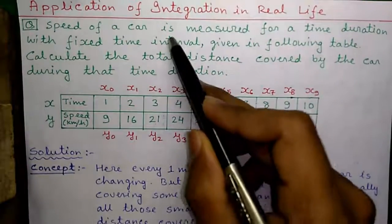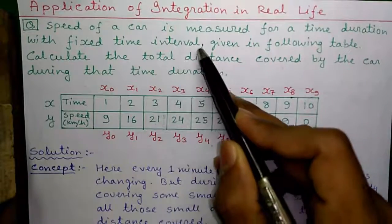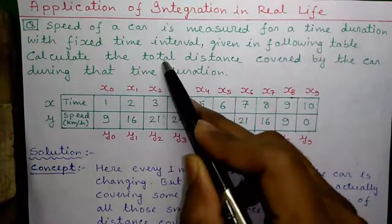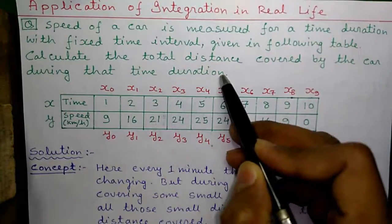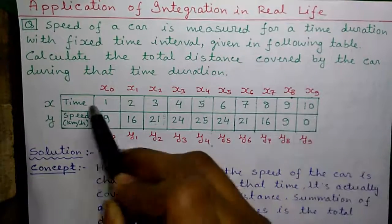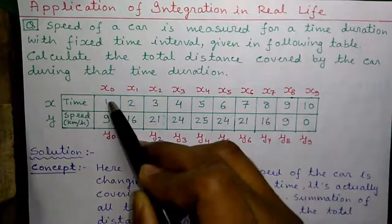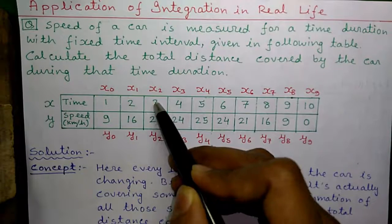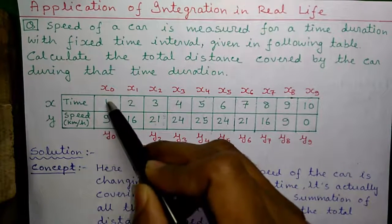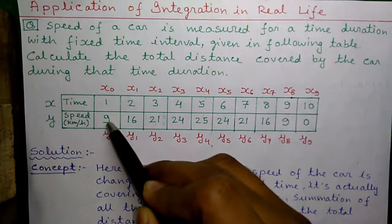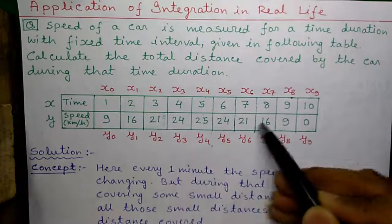This is our question. Speed of a car is measured for a time duration with a fixed time interval given in the following table. Calculate the total distance covered by the car during that time duration. The table gives time values from 1 to 10 with an interval of 1 minute, and the corresponding speed of the car. At the first minute, speed was 9 km per hour; at the second minute, speed was 16 km per hour, and so on.